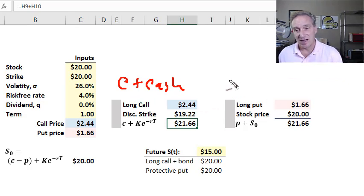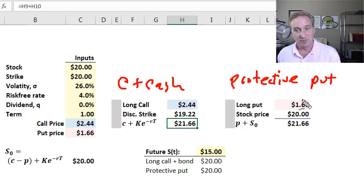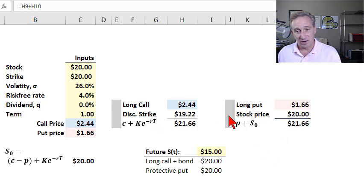On the right hand side, I have protective put, because I think that's just really easy to memorize. A protective put is when you buy a put and cover it with stock ownership. The put price of $1.66 plus the stock price of $20 necessarily equals $21.66. My memory mnemonic is call plus discounted cash equals protective put.